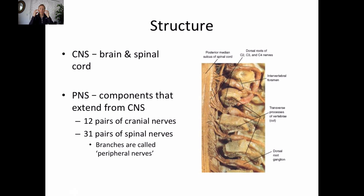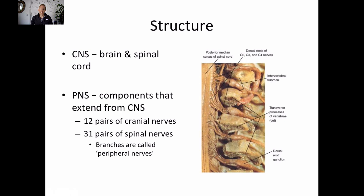Cranial nerves extend out and give us sensation and motor function to muscles of our face, allow us to taste things, move our eyes, move the tongue. In terms of musculoskeletal science, we won't talk a lot about those. Today we'll focus mainly on spinal nerves, which start in the cervical spine, go out to our arms, thoracic spine, and then the lumbar spine which goes out to our legs. The branches of those spinal nerves become our large peripheral nerves — the median nerve, ulnar nerve, radial nerve, musculocutaneous nerve in the upper extremity, and the femoral nerve, sciatic nerve, tibial nerve, and peroneal nerve in the lower body.